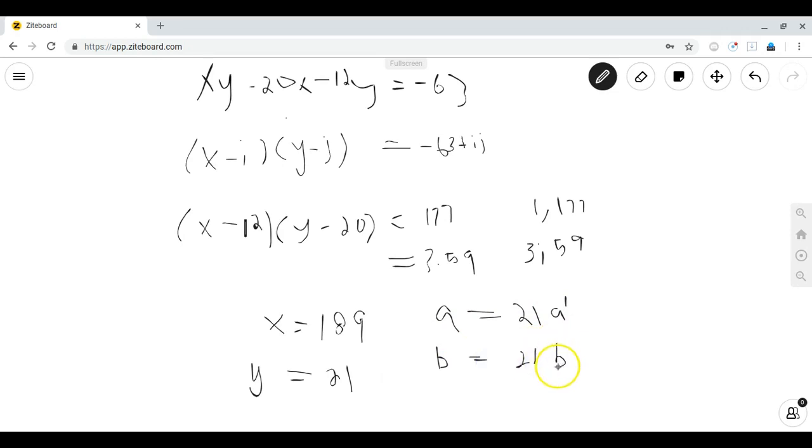So all pairs a prime, b prime that satisfy this will also have solutions for a and b.